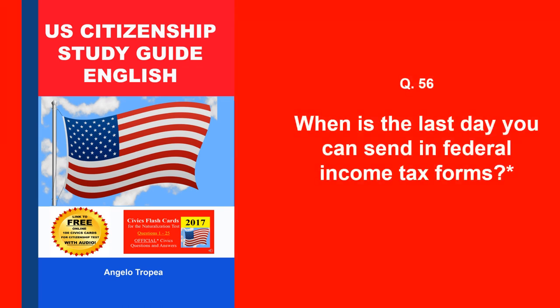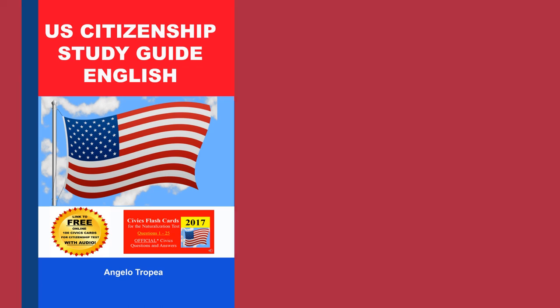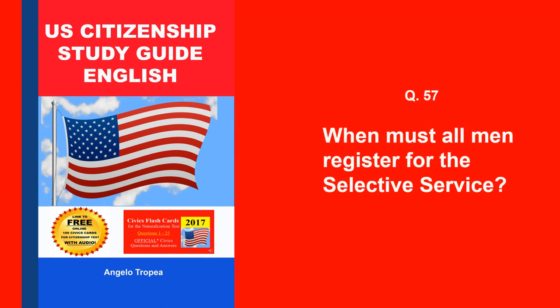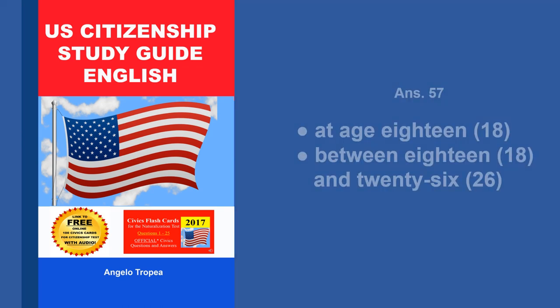When is the last day you can send in federal income tax forms? April 15. When must all men register for the Selective Service? At age 18. Between 18 and 26.